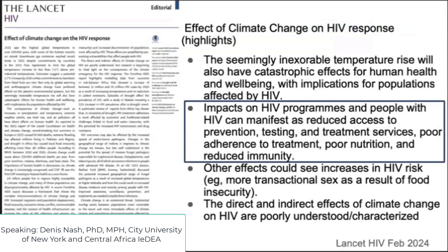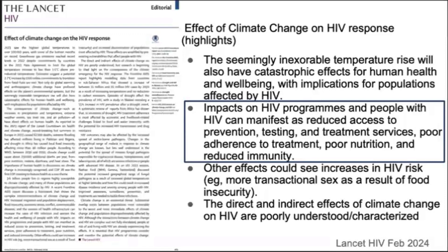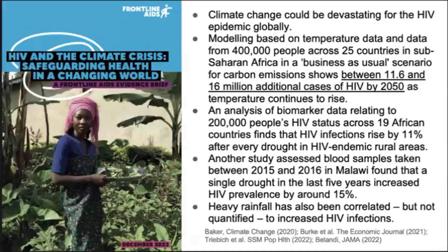There was a recent editorial from last month in the Lancet HIV about this particular issue, specifically focused on the effect of climate change on the public health response to the HIV epidemic. It highlights that the impacts on HIV programs and people with HIV can manifest through reduced access to prevention, testing and treatment services, poor adherence to treatment, poor nutrition, and reduced immunity. A recent Frontline AIDS report described modeling work predicting an additional 12 to 16 million new HIV infections in sub-Saharan Africa alone resulting from climate change under the business-as-usual scenario.